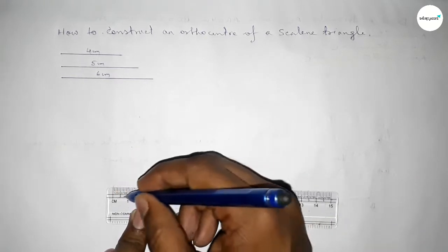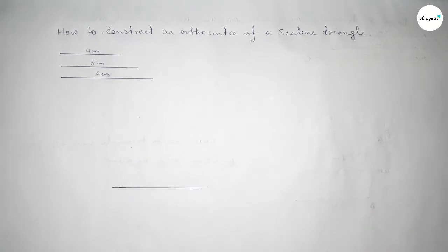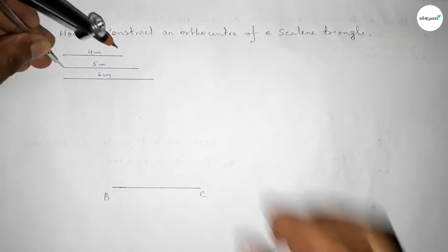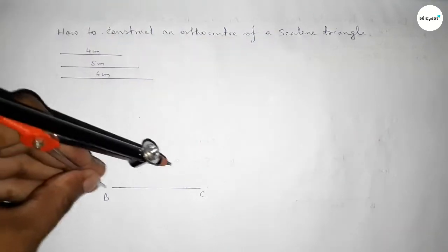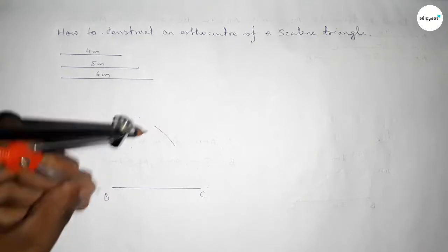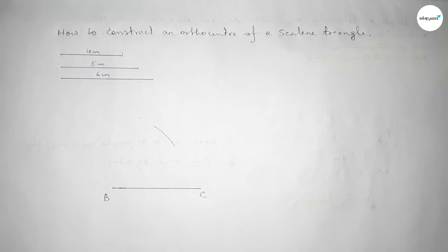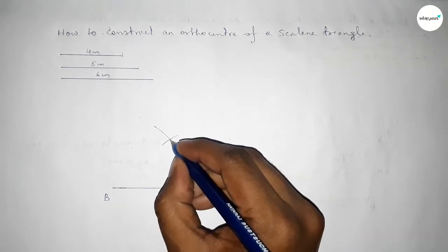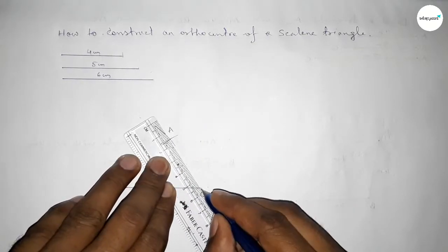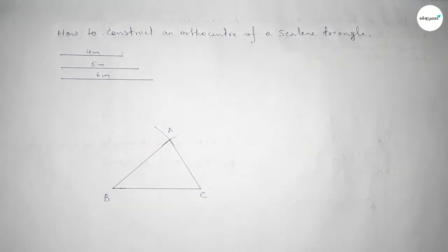We draw a line of length six centimeters and take points B and C. Now taking the length five centimeters by using the compass and putting the compass on C and drawing an arc. Again taking the length four centimeters by using the compass and putting it on B, cutting an arc. Both curves intersect at point A.